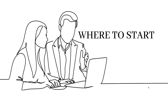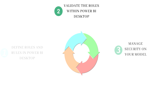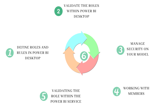Now the question comes: where to start? You have to follow a certain process. First, you have to define roles and rules in Power BI Desktop. Then you have to validate the roles within Power BI Desktop. After that, you have to manage the security on your model. At step four, you have to work with the members — that means you have to add members into the RLS roles you have created. And finally, we are going to validate the roles within the Power BI service. These are the five steps you need to follow whenever you are going to implement row-level security into your Power BI reports.